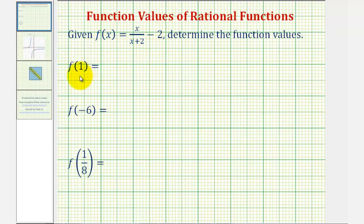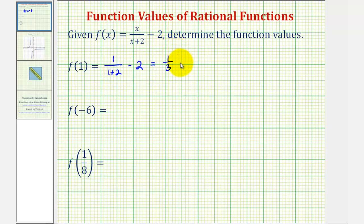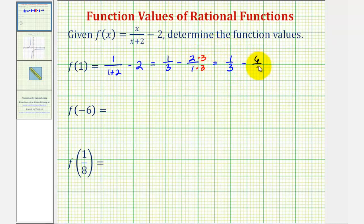To determine the function value f of one, we'll substitute one for x, which would give us one divided by the quantity one plus two, minus two. Let's first simplify this fraction. We'd have one-third minus two, which I'll write as minus two over one, because to perform this subtraction we have to obtain a common denominator, which would be three. So we're going to multiply two over one by three over three to find an equivalent fraction with a denominator of three. So now we have one-third minus six-thirds. The denominator stays three, and the numerator would be one minus six, which is negative five. So f of one equals negative five-thirds.